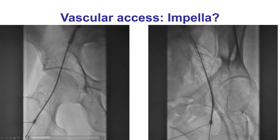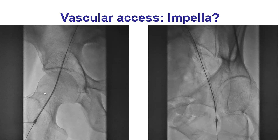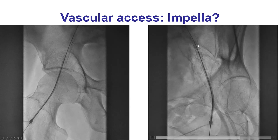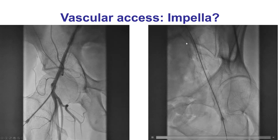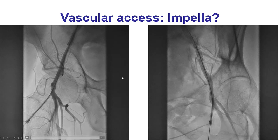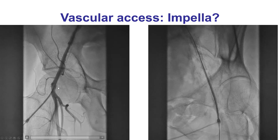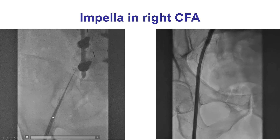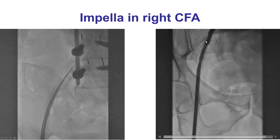The decision was made to proceed with PCI of the LAD CTO. Because the patient still had a high wedge pressure, we decided to use hemodynamic support. He had bilateral iliac stents, and the question was whether we could place an Impella device through those stents. After discussing with vascular surgery, the final plan was to place an Impella through the right common femoral artery, which was eventually advanced inside the previously placed iliac stent.